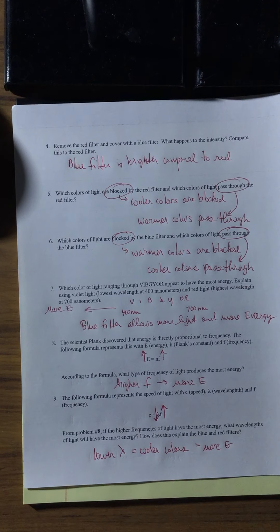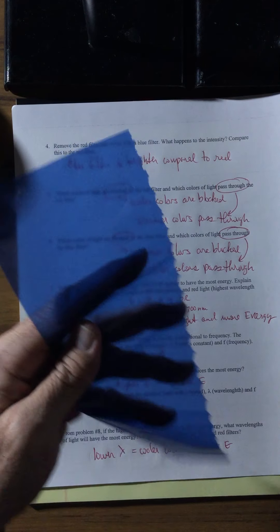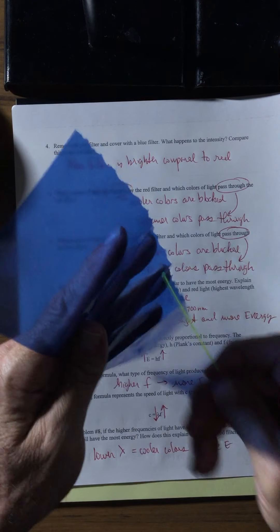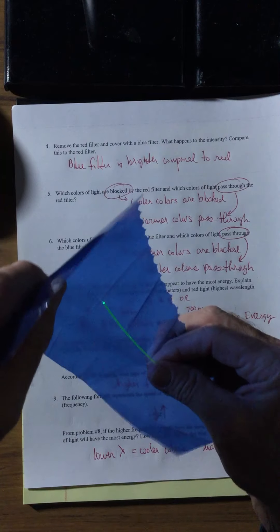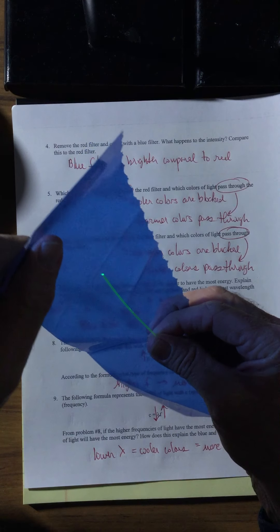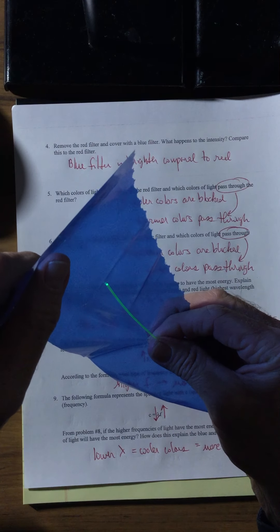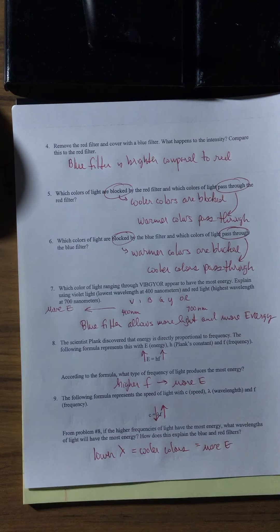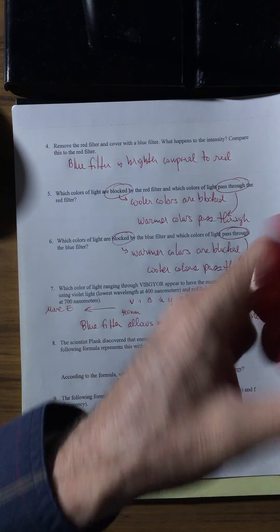That's why when you use the blue filter, which allows the cooler colors to pass through, it's glowing more. The red filter blocks the cooler colors, and it's glowing less.